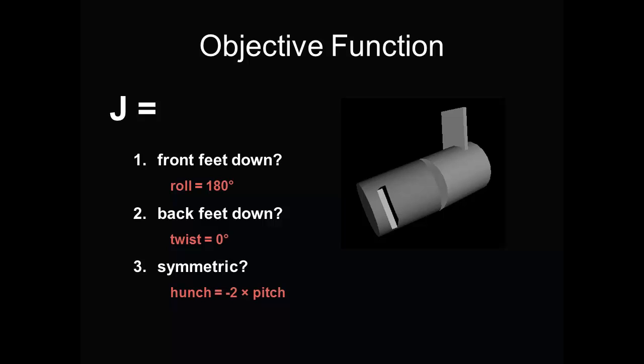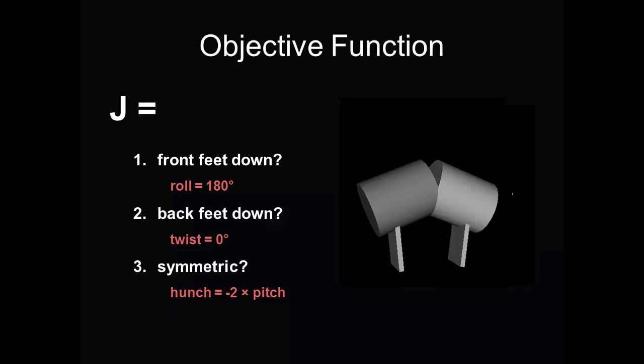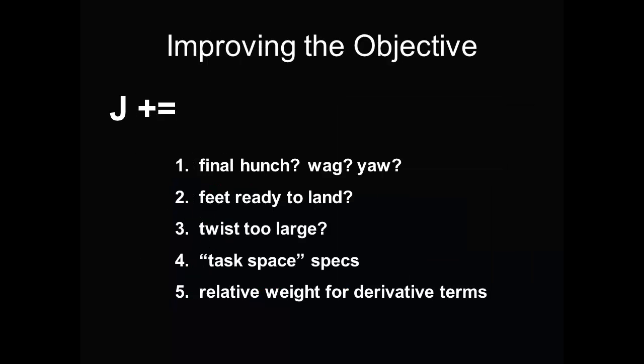Here a cat goes from some arbitrary configuration to feet down. To help the optimizer find good solutions, we needed to more fully specify the cat's final pose by adding terms to the objective function. For example, we applied a penalty to the objective if the model twisted its spine by more than 90 degrees during the maneuver.